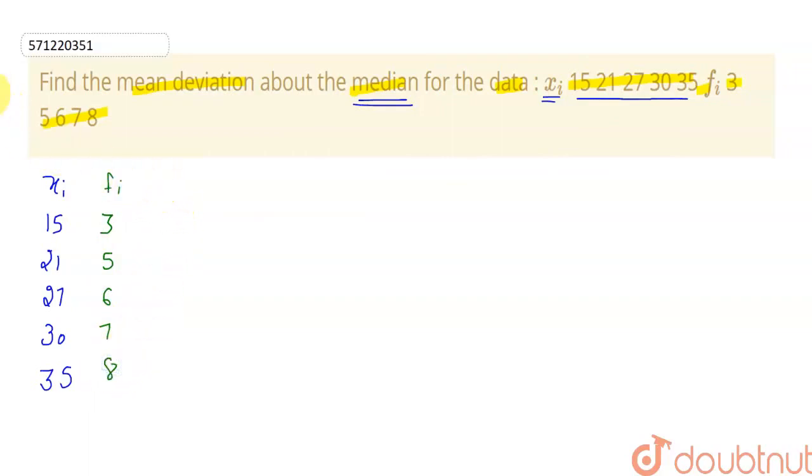Then we have to find the cumulative frequencies. Cumulative frequency is 3. 3 plus 5 will give me 8. 8 plus 6 will give me 14. 14 plus 7 will give me 19. 19 plus 8 will give me what?